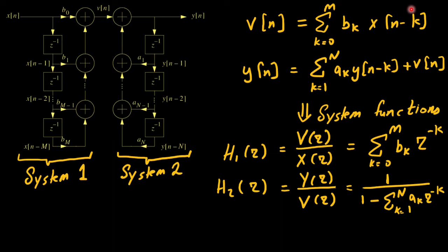And for the second cascaded system that is h2 of z, the system function is h2 of z which is the output y of z over the intermediate output which is v of z. And this is equivalent to 1 over 1 minus summation from k 1 to n ak z to the power minus k.